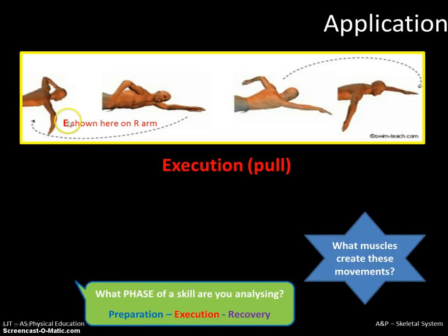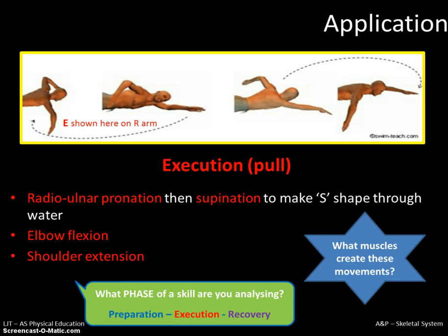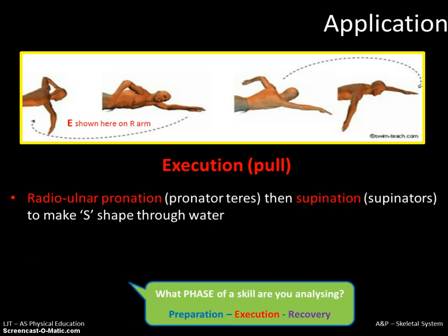Moving on to the execution phase, we're looking at the right arm and the S-shape sweeping action through the water. A different joint is introduced here: the radial ulnar joint, a pivot joint between the radius and the ulna. In the outward curve of the S-shape there's pronation — rotation at the radial ulnar joint — and in the inward movement there's supination, where your palm faces upwards. The elbow flexes as you pull through the water, and the shoulder extends as you push, moving backwards towards your thighs.